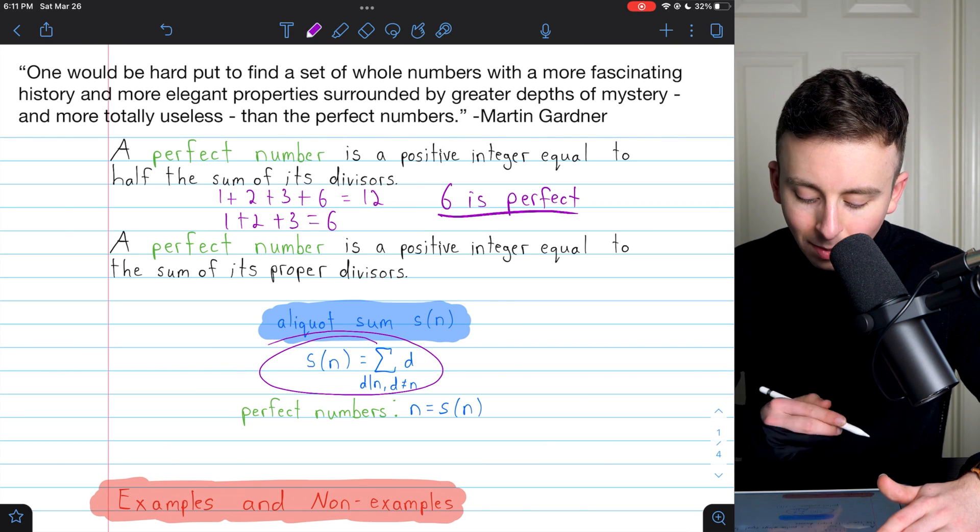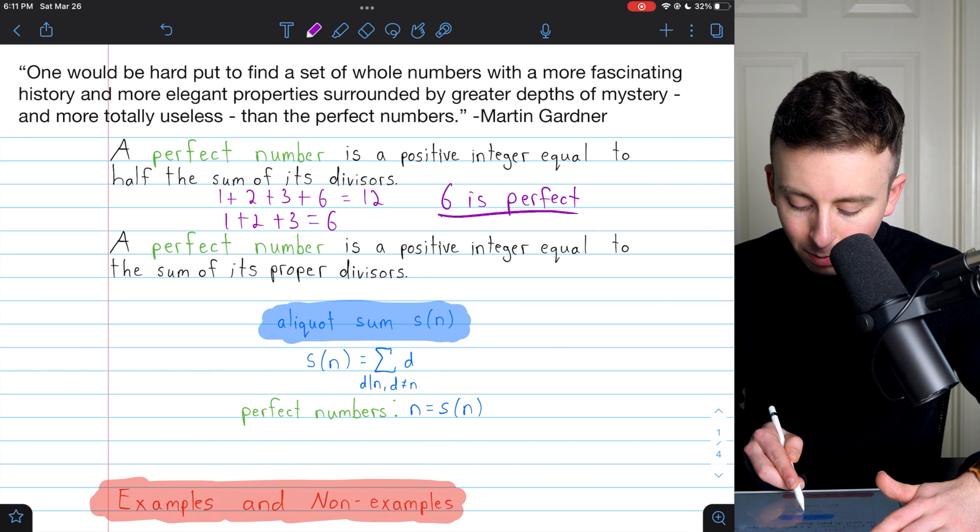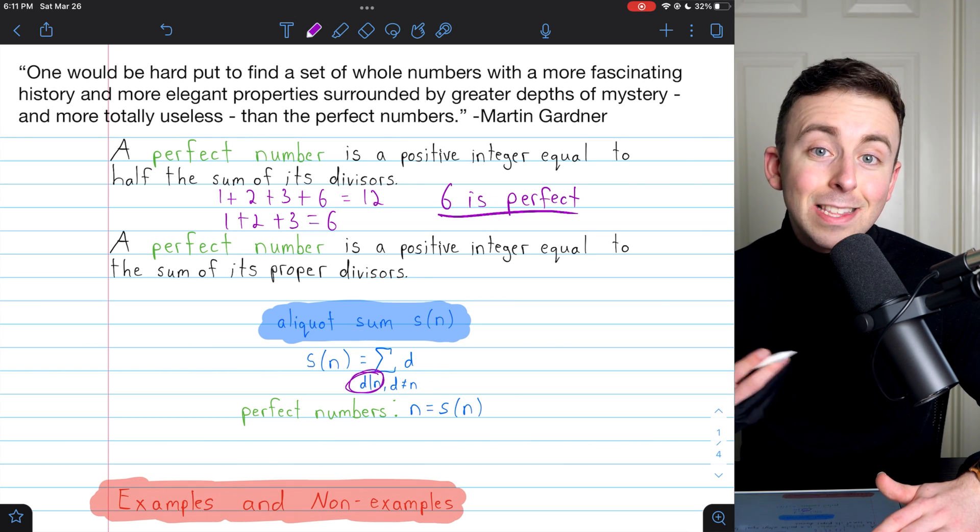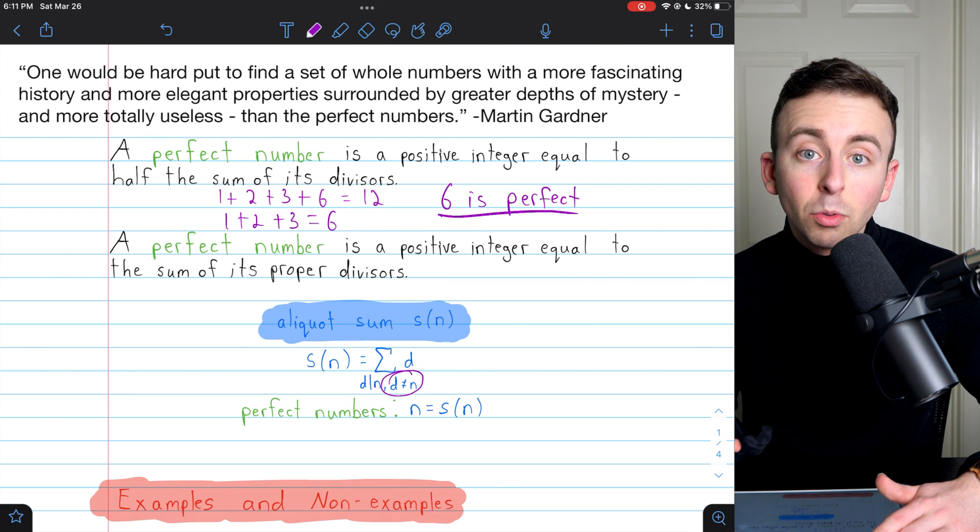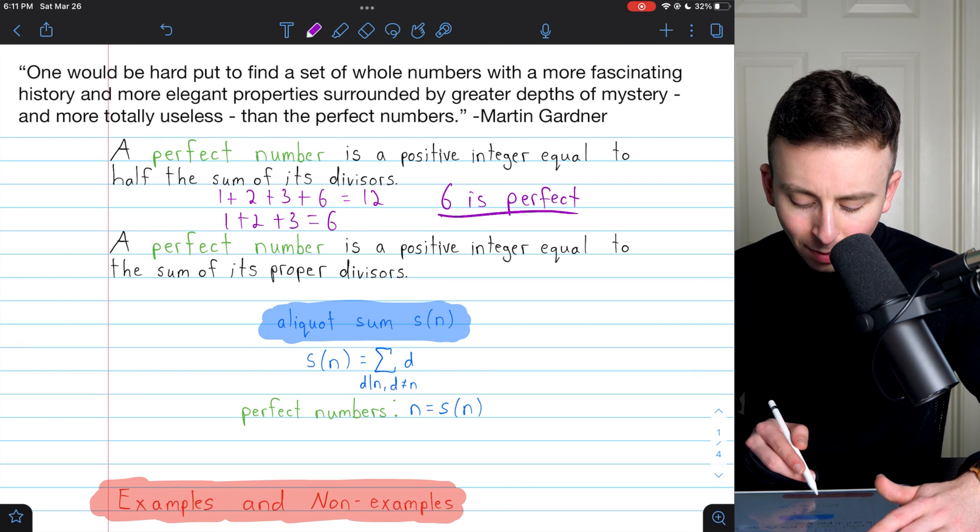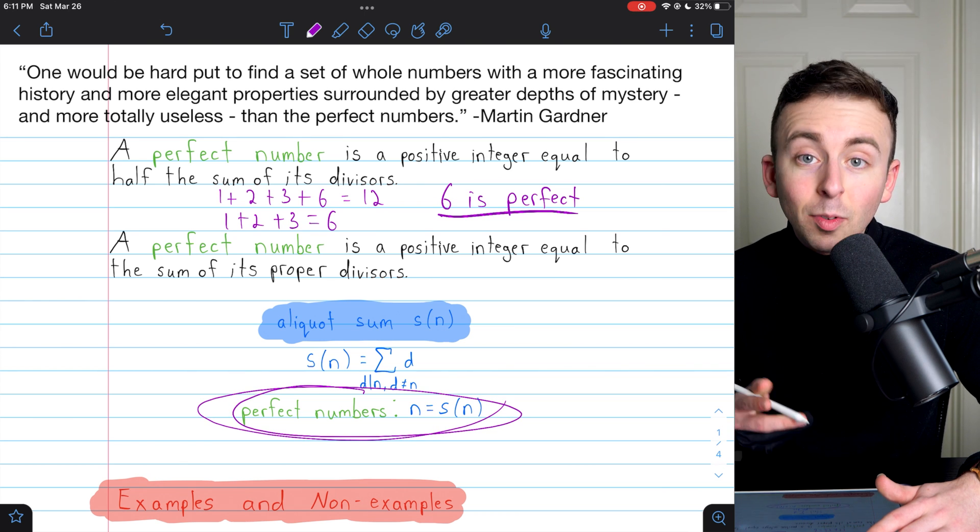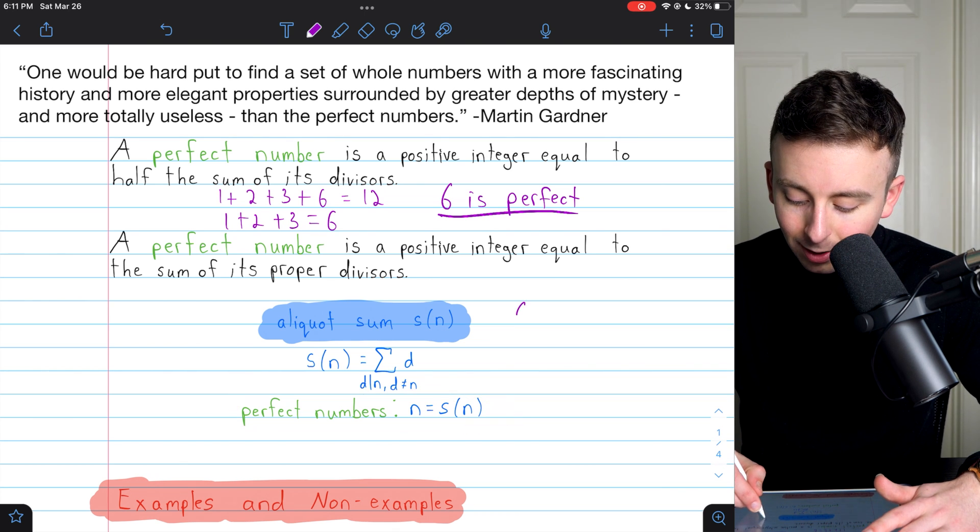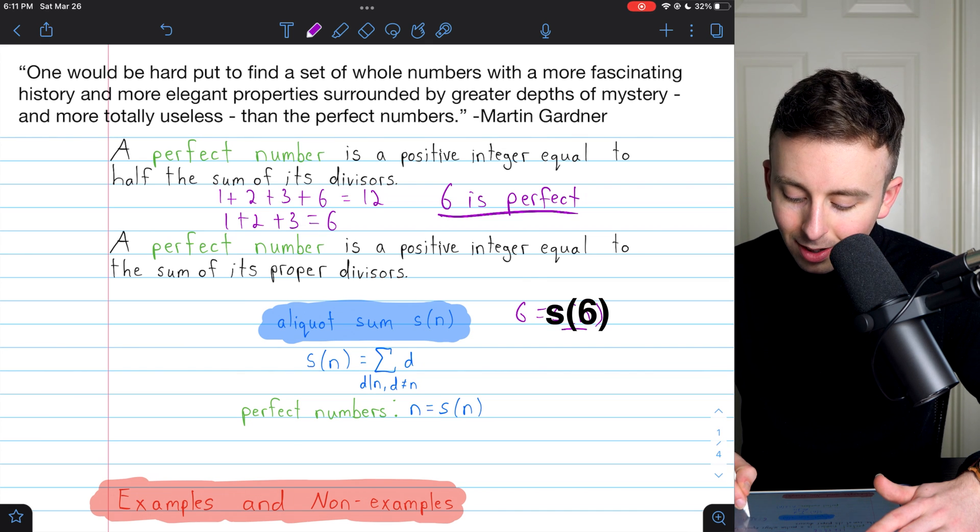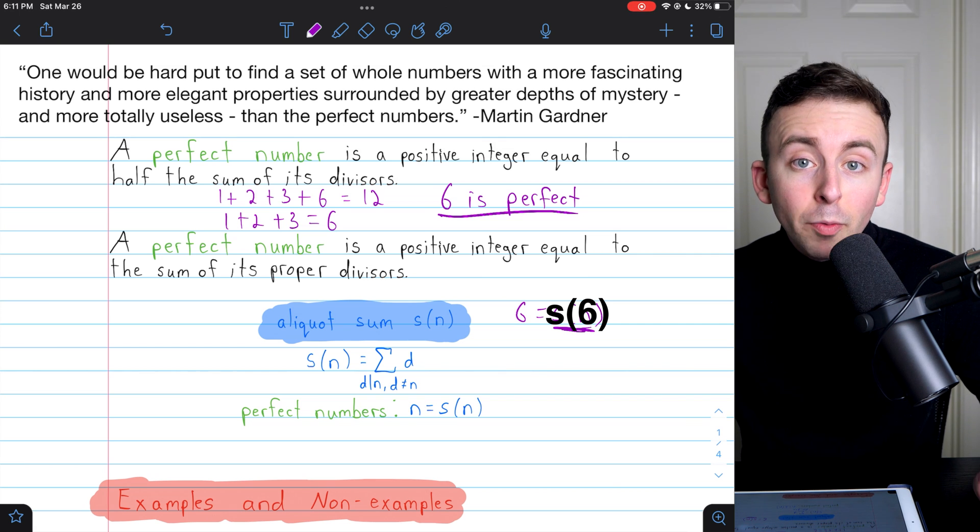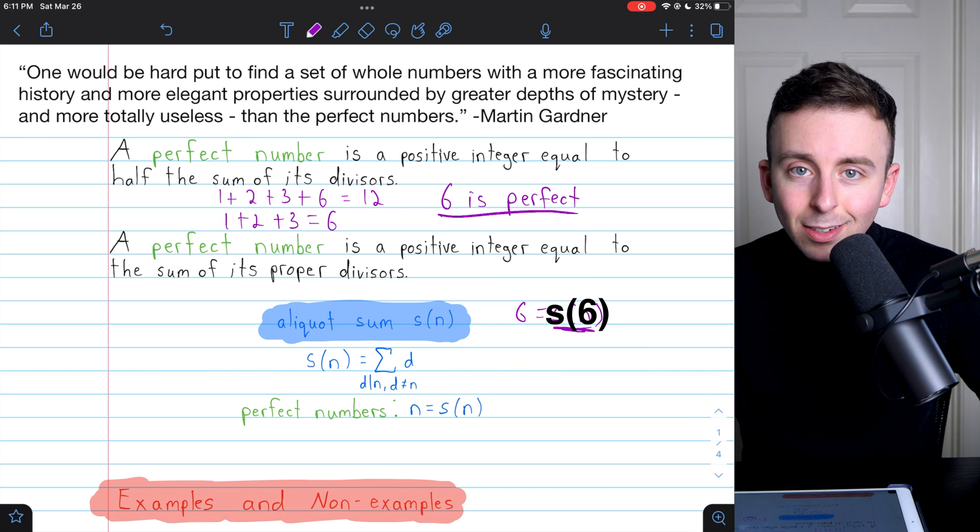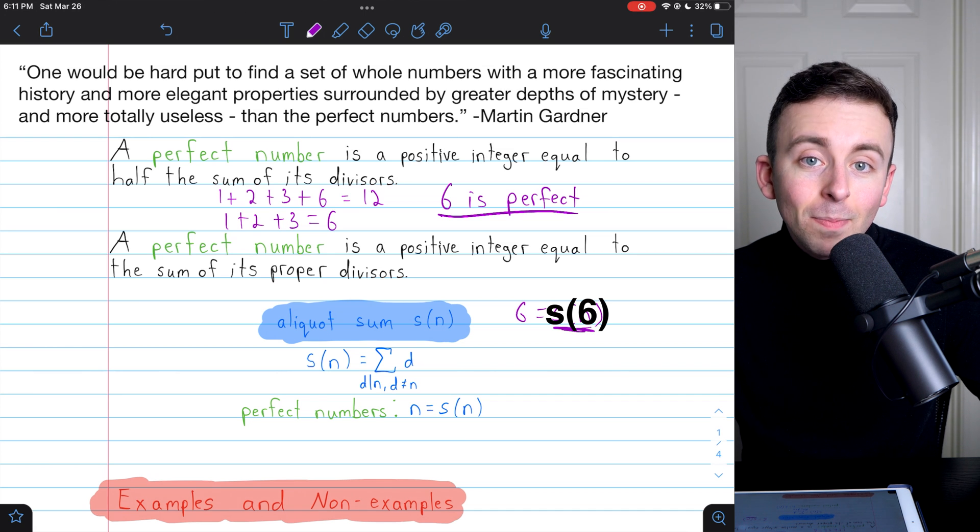So S(6) is 6. And that's what makes 6 a perfect number. Again, the eloquent sum is the sum of the proper divisors of a number. So all numbers d that divide n, where d is not equal to n. Those are the proper divisors of n. And a number is perfect if it equals its eloquent sum. 6 equals the eloquent sum of 6. It equals the sum of its proper divisors. That's what makes it perfect. So a perfect number is a positive integer that equals its eloquent sum, the sum of its proper divisors.